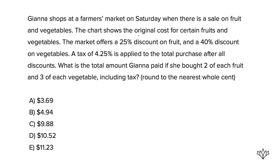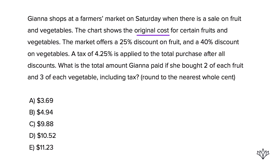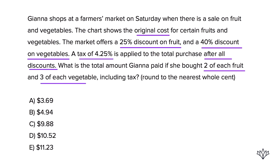When you see a data analysis question — you've got a word problem and they've given you a chart — it can seem a little overwhelming. Gianna shops at a farmer's market on Saturday when there's a sale on fruit and vegetables. The chart shows the original cost for certain fruits and vegetables. The market offers a 25% discount on fruit and a 40% discount on vegetables. A tax of 4.25% is applied to the total purchase after all discounts. So you do the discounts first, then you apply the tax. The question asks: what is the total amount Gianna paid if she bought two of each fruit and three of each vegetable, including tax?